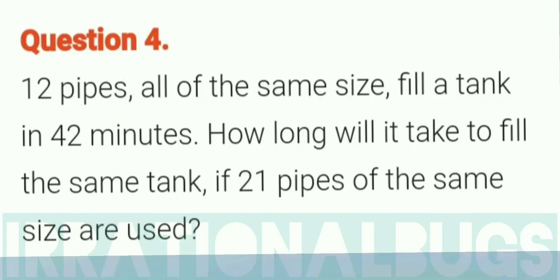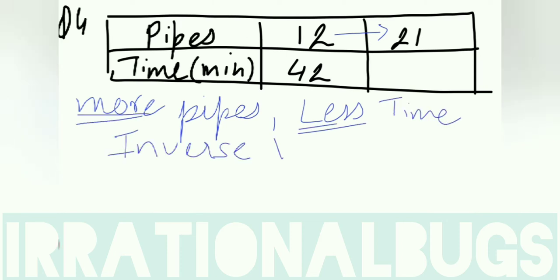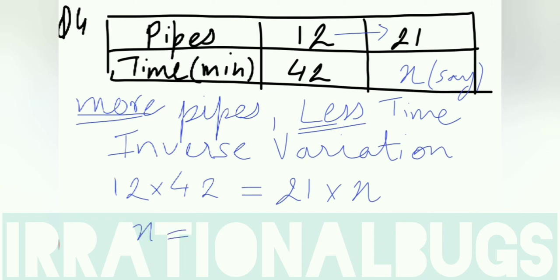Question number 4: 12 pipes, all of the same size, fill a tank in 42 minutes. How long will it take to fill the same tank if 21 pipes of the same size are used? The two quantities are pipes and time. The number of pipes is increased, so time will be less. Again inverse. When 12 pipes become 21 pipes, that means more pipes. The more pipes working to fill the tank, the faster it fills. That means more pipes, less time. Inverse variation means multiply. 12 into 42 is equals to 21 into x. x is equals to 12 into 42 upon 21, that is 24 minutes.